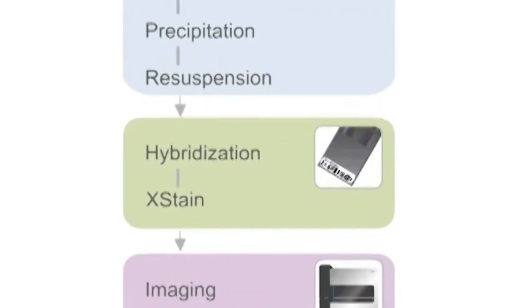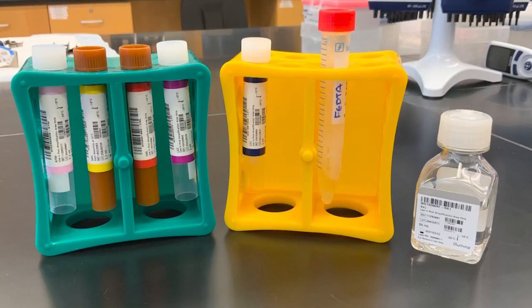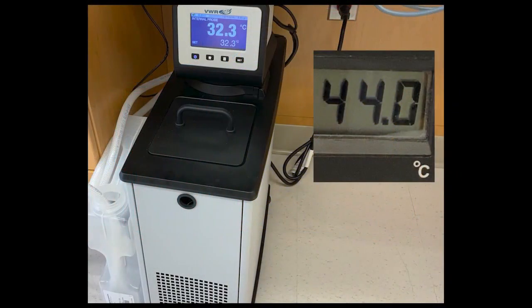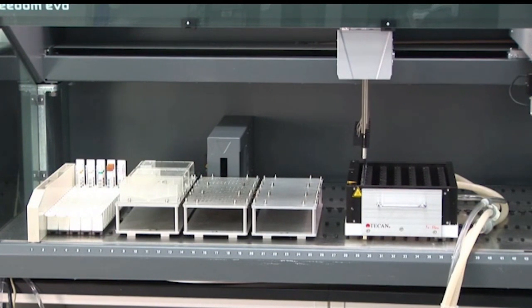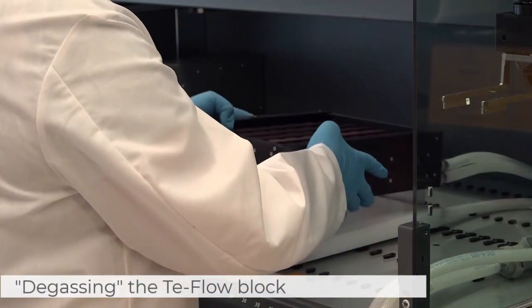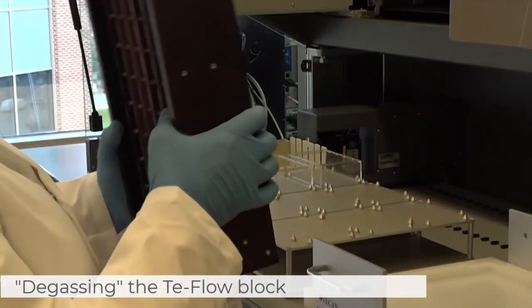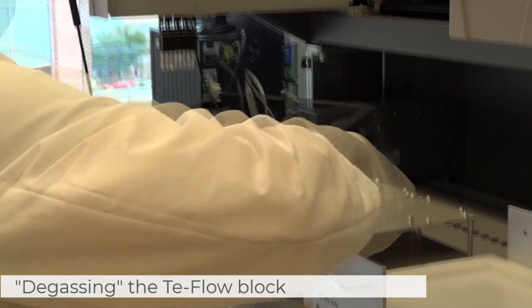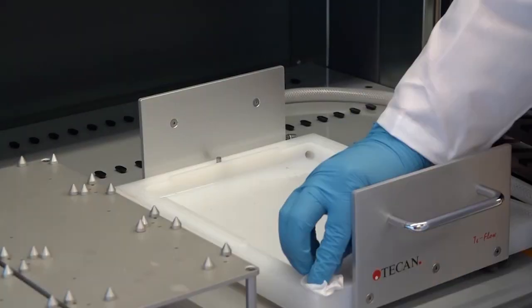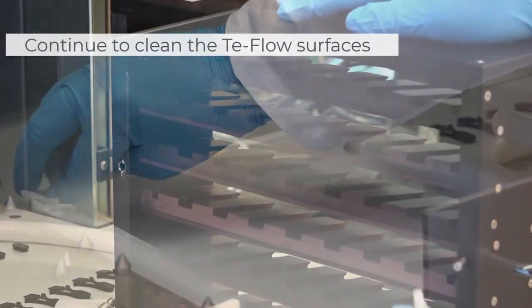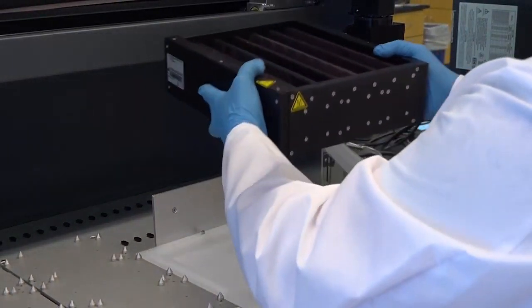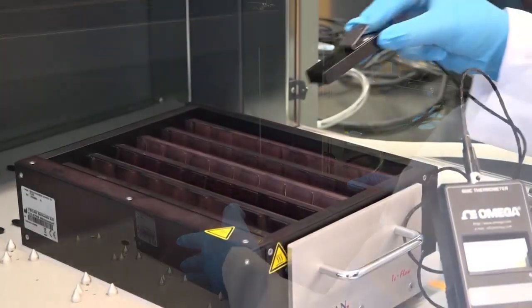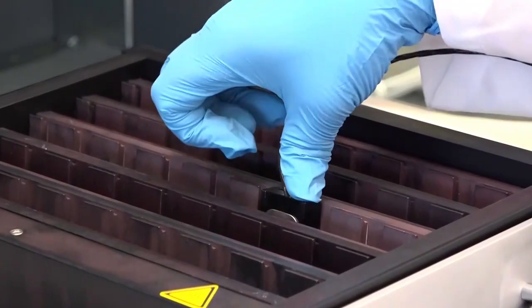The next step in the Infinium assay is X-Stain. Thaw all X-Stain reagents. Set the water circulator attached to the T-Flow block to 44 degrees Celsius. If performing X-Stain on the T-Can robot, the water circulator will automatically turn on to 44 degrees. Before using the T-Flow block, rotate the entire unit to allow any air bubbles in the block to escape. Air bubbles can lead to uneven heating of the metal and may lead to sub-optimal data quality. Check the temperature with a probe in several locations to ensure uniformity.